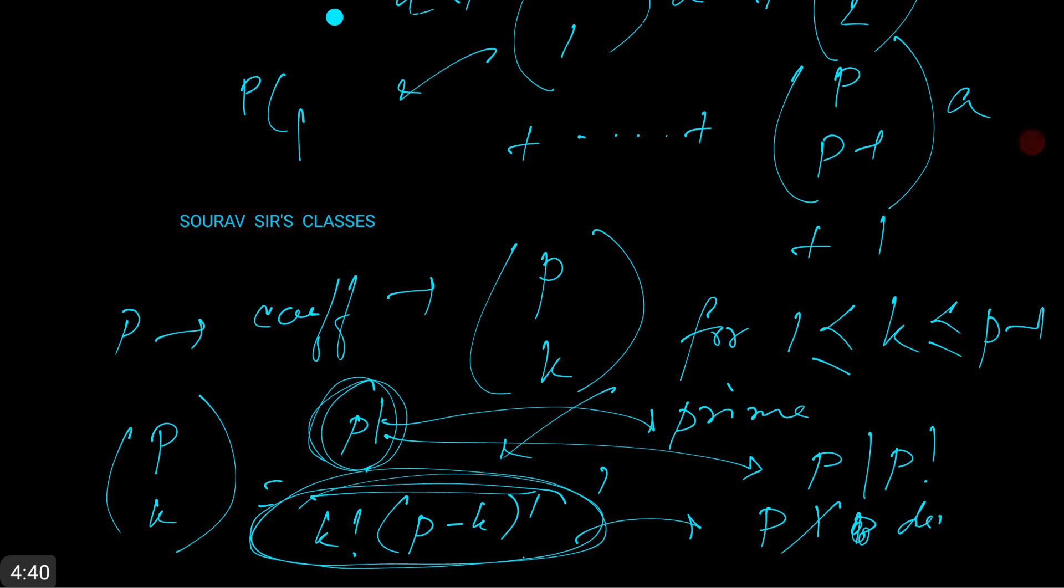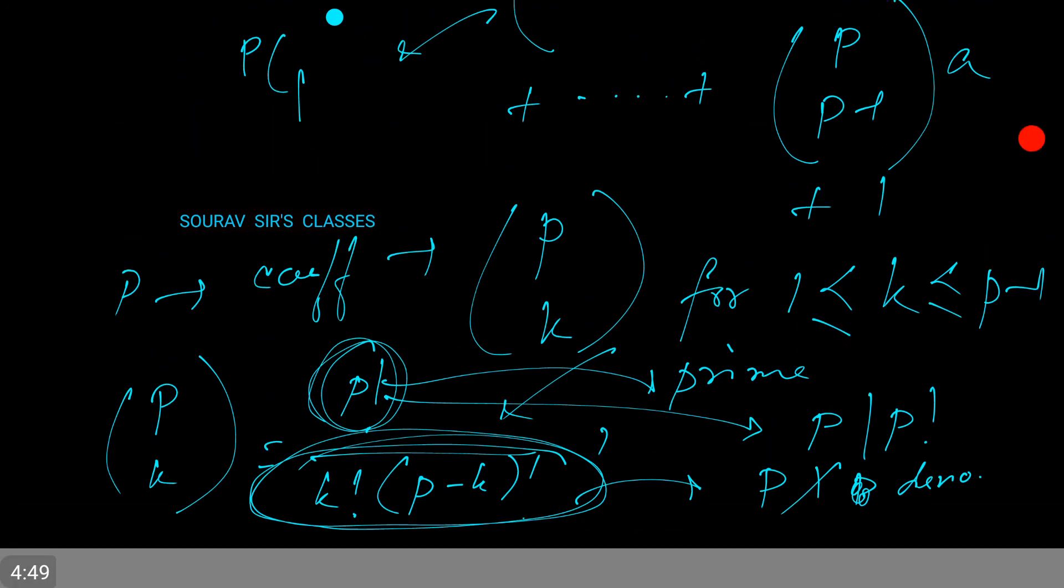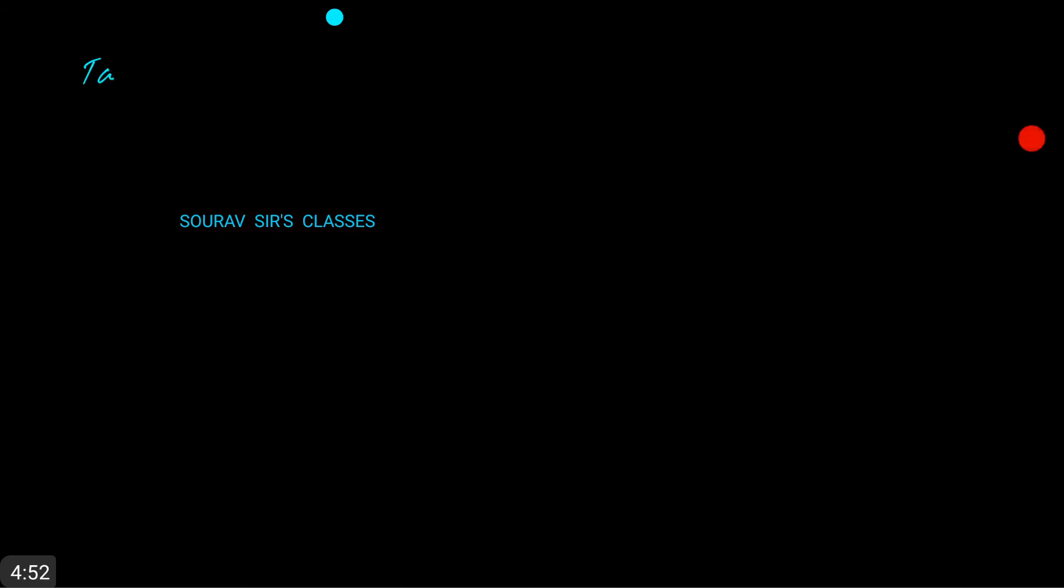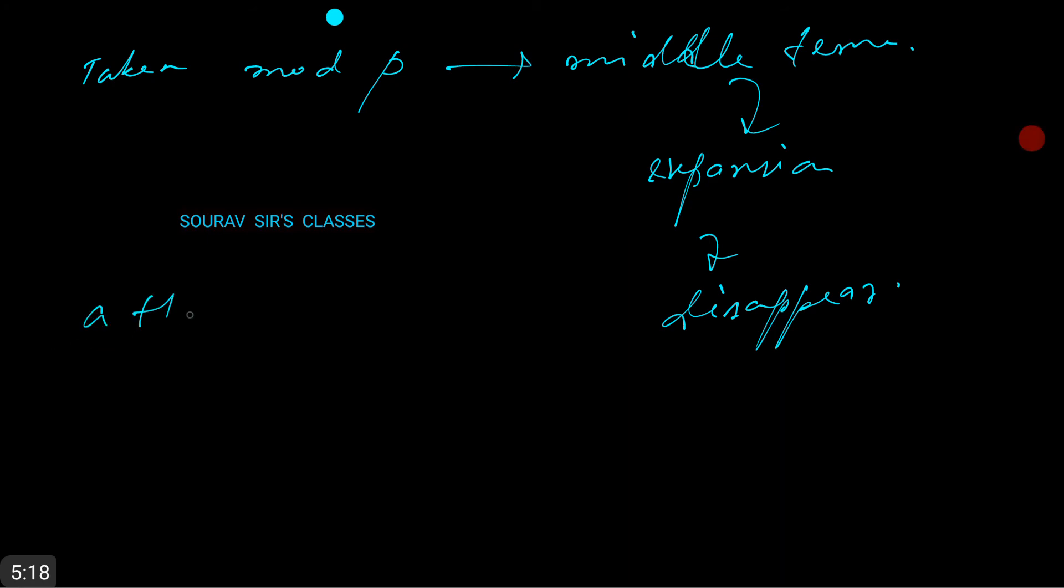Now when taken mod p, let's just go to the next page. When we take mod p, all the middle terms of the expansion disappear, and we end up with a plus 1 to the power p is congruent to a to the power p plus 1 mod p.